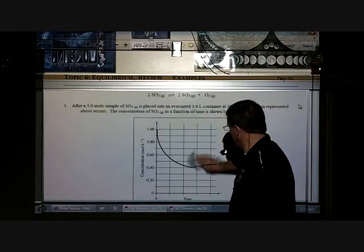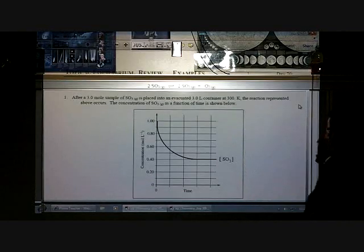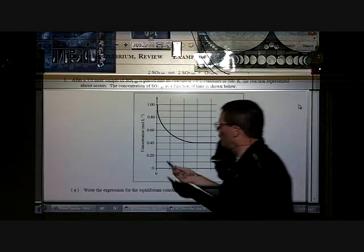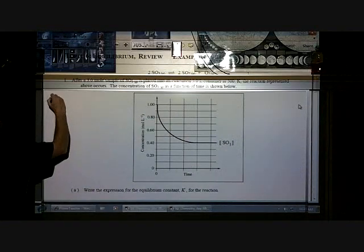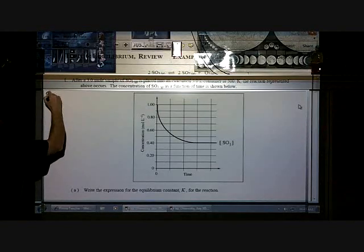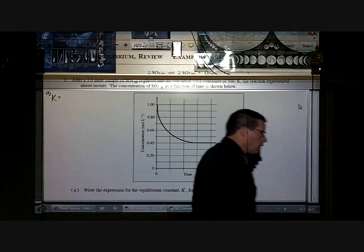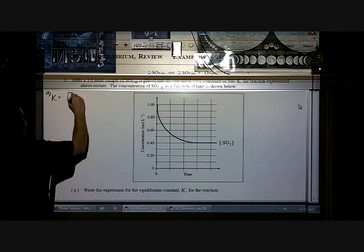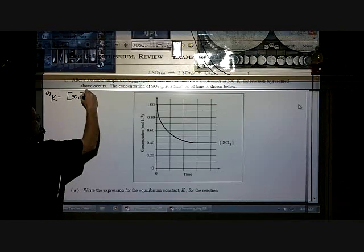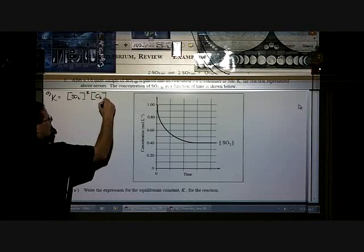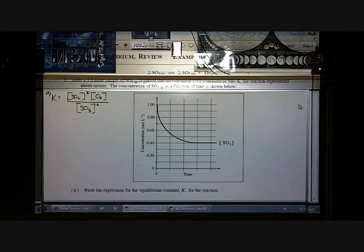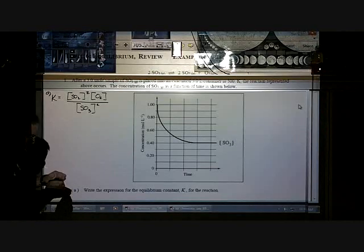So that's just some background information. So let's look at part A. It says write the expression for the equilibrium constant for the reaction. And so it's asking for K. Now, do we have pressures or concentrations for this? Concentrations. So do we need parentheses or brackets? Good. So products over reactants. What are the products? SO2, do we do anything to that? Yeah. So we'll square that. And oxygen is by itself and SO3. And we'll square that as well. And we don't know what that value is equal to yet. We'll figure it out later. So that's part A.